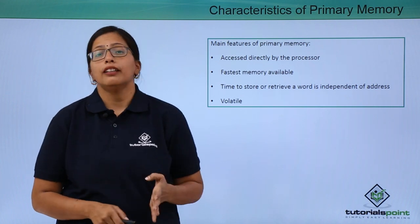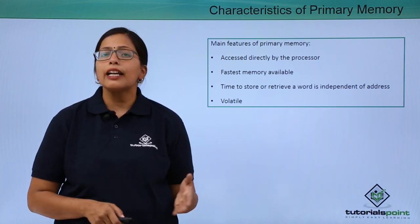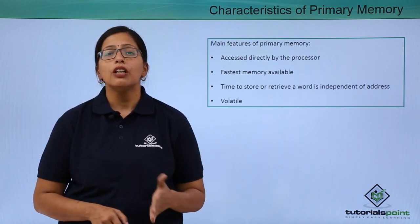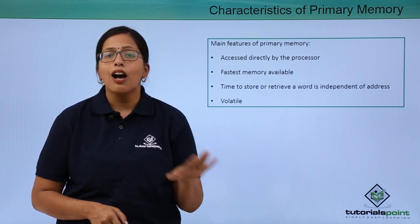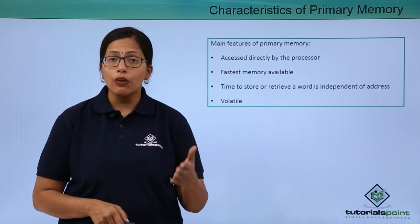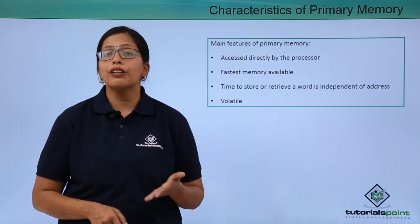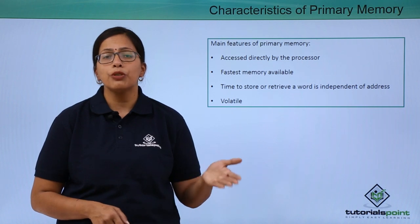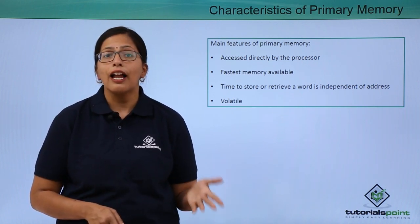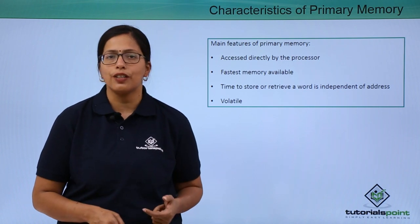It is volatile. RAM is volatile — that means the moment you switch off the power, whatever data or instructions are stored there will be erased. However, it is still the most important part of computer memory because it is the fastest, and hence the most expensive as well.